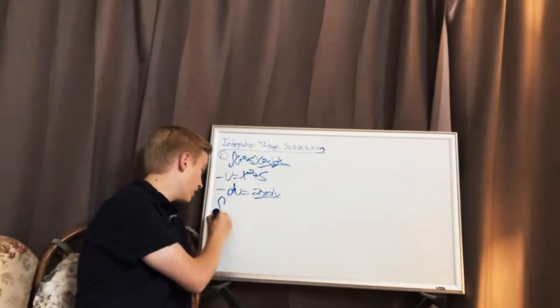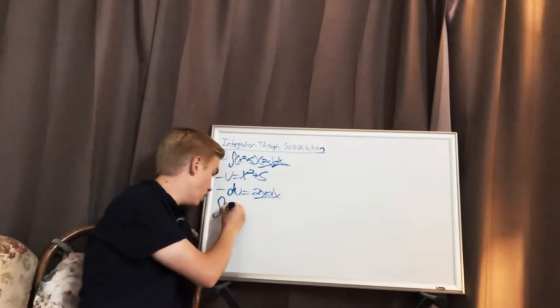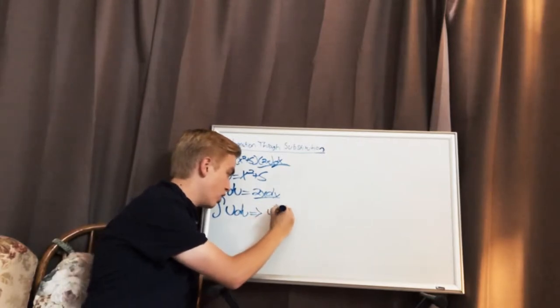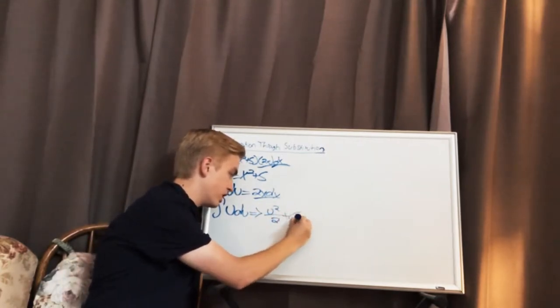We will now rewrite our integral. We have the integral of u du. After integrating, we get u squared over 2 plus c.